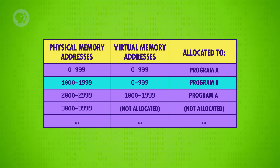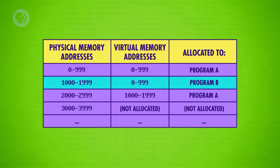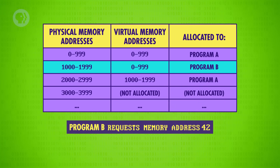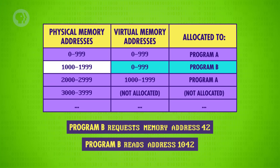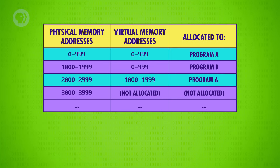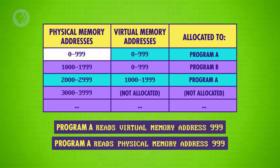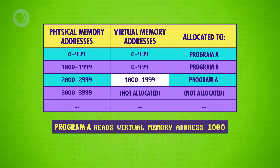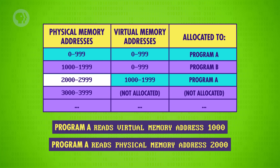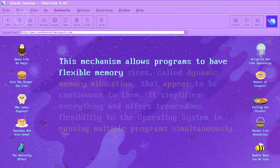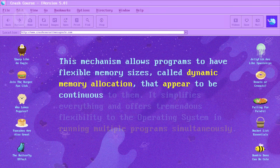Let's take our example Program B, which has been allocated a block of memory from address 1,000 to 1,999. As far as Program B can tell, this appears to be a block from 0 to 999. The OS and CPU handle the virtual to physical memory remapping automatically. So if Program B requests memory location 42, it really ends up reading address 1,042. This virtualization is even more useful for Program A, which has been allocated two blocks of memory separated from one another. As far as it can tell, it's been allocated a continuous block of 2,000 addresses. When Program A reads memory address 999, that coincidentally maps to physical address 999. But if it reads the very next value at address 1,000, that gets mapped to physical memory address 2,000. This mechanism allows programs to have flexible memory sizes — called dynamic memory allocation — that appear continuous to them.